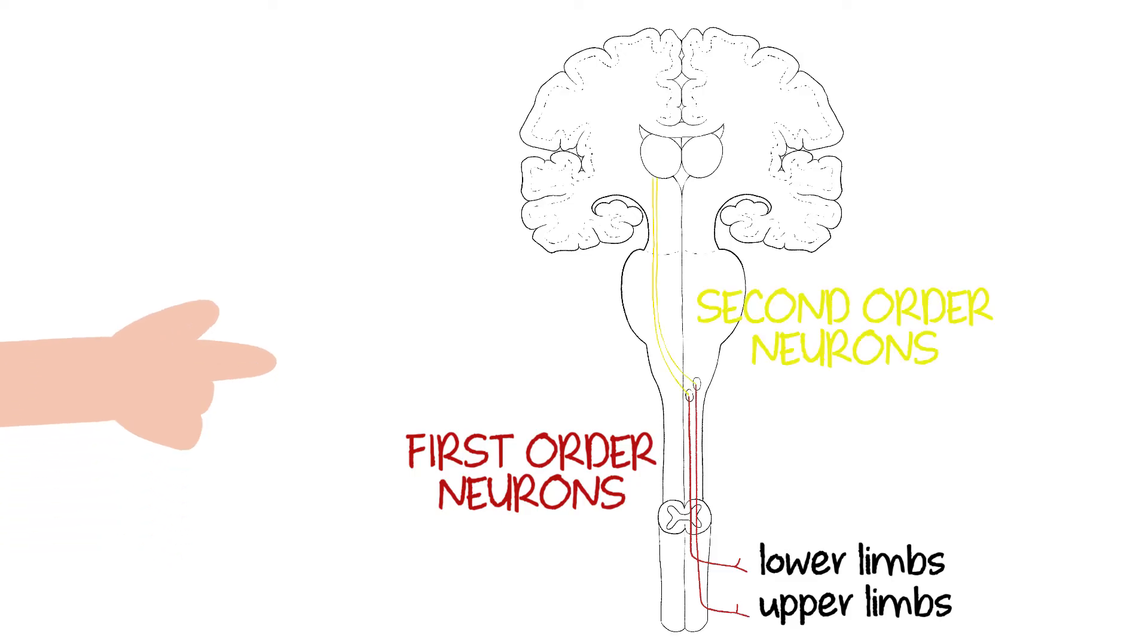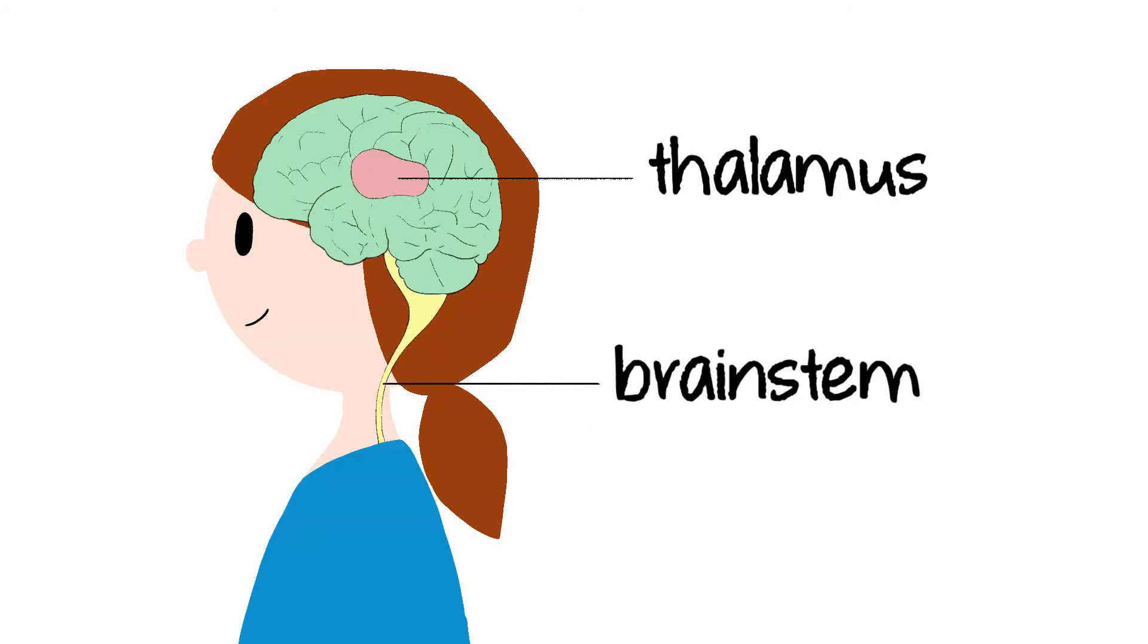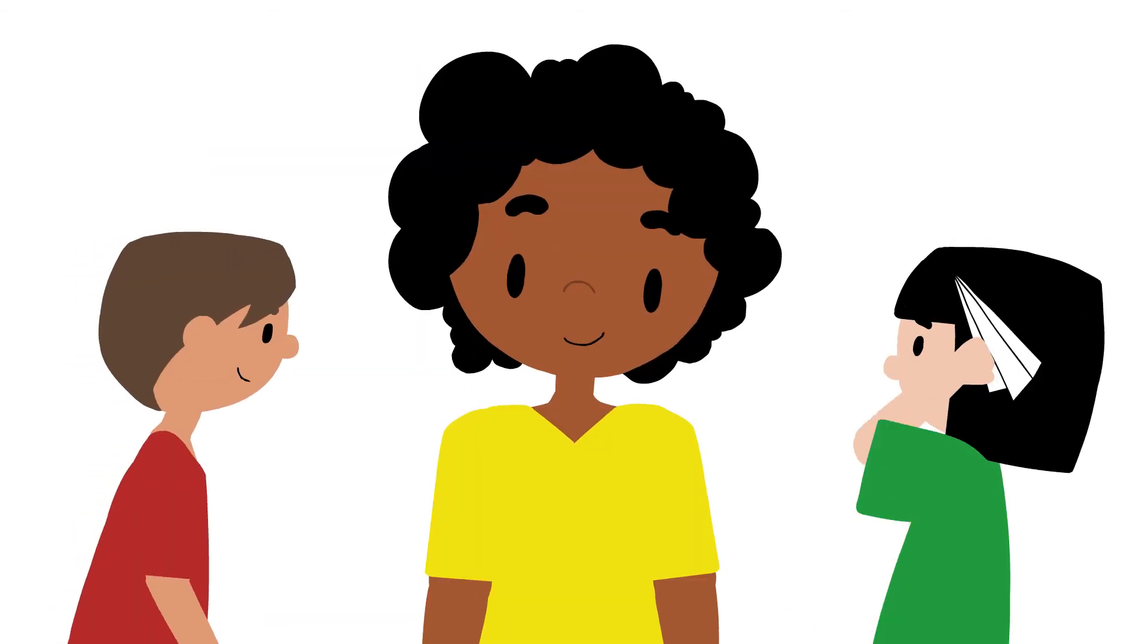The information gets to the brain like this. At the brainstem and thalamus level, proprioception can influence the processing of other sensory information, helping us to stay regulated and pay attention.